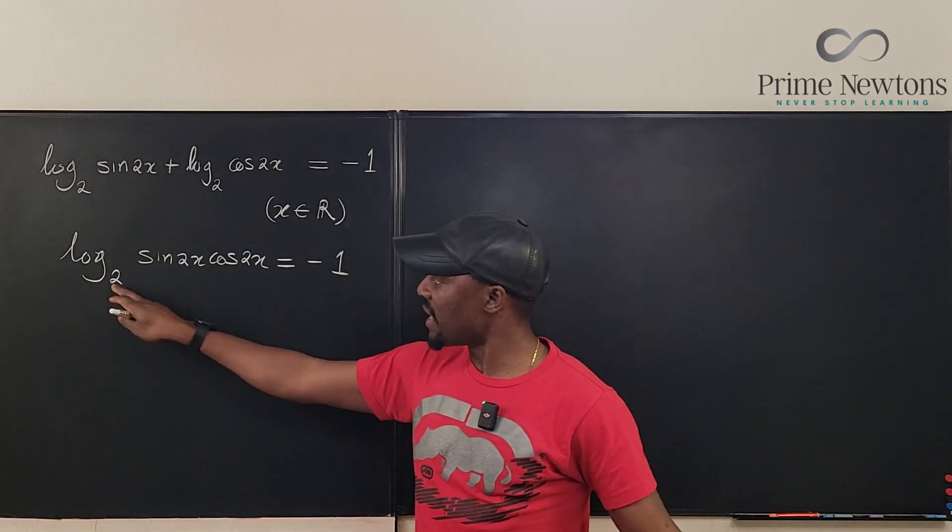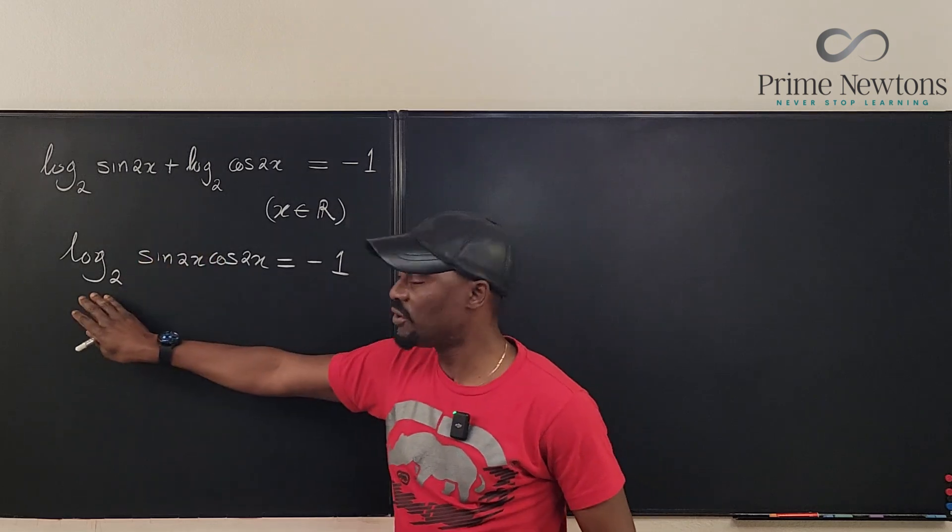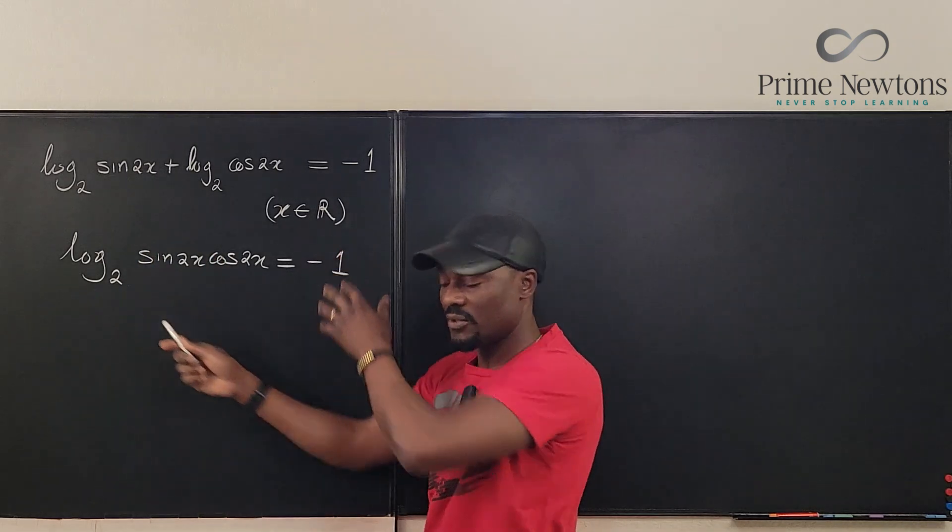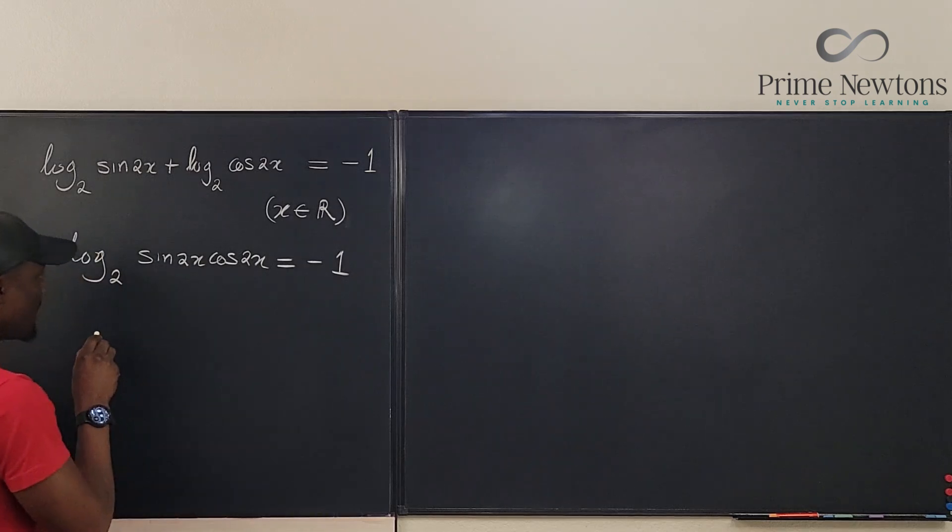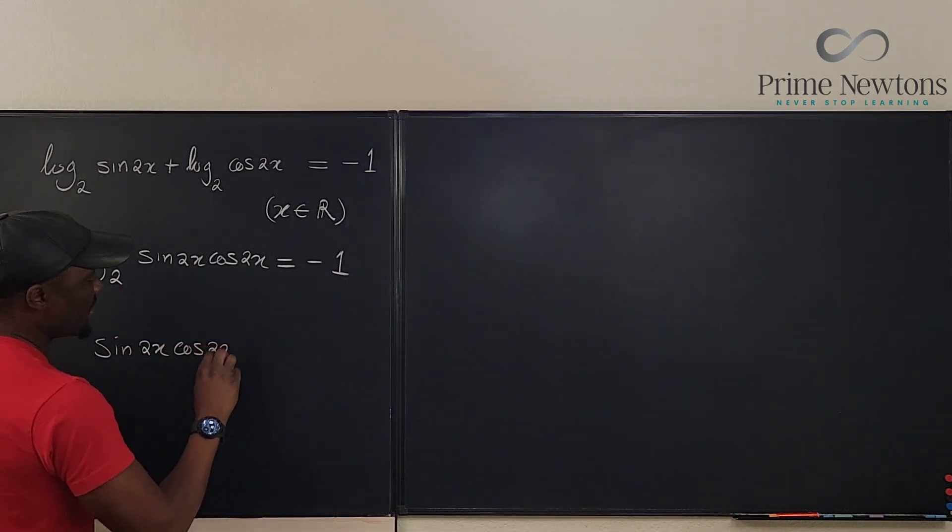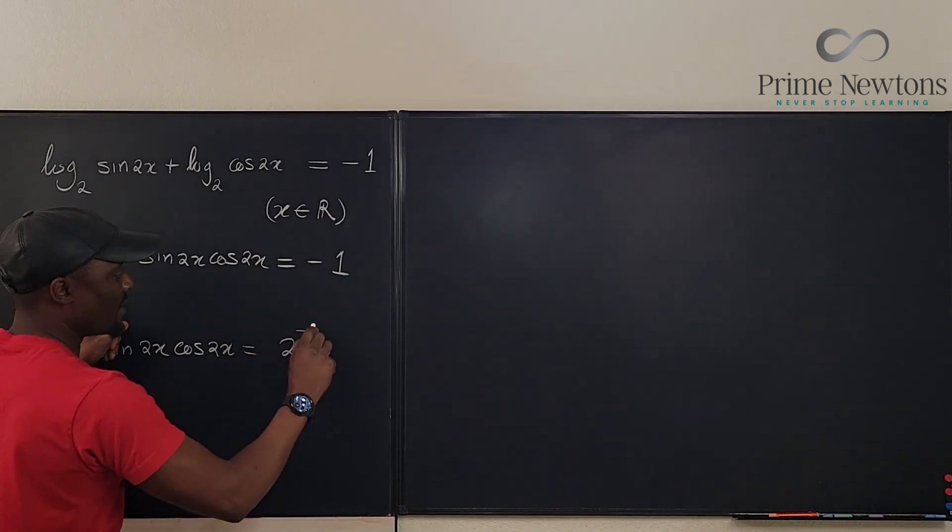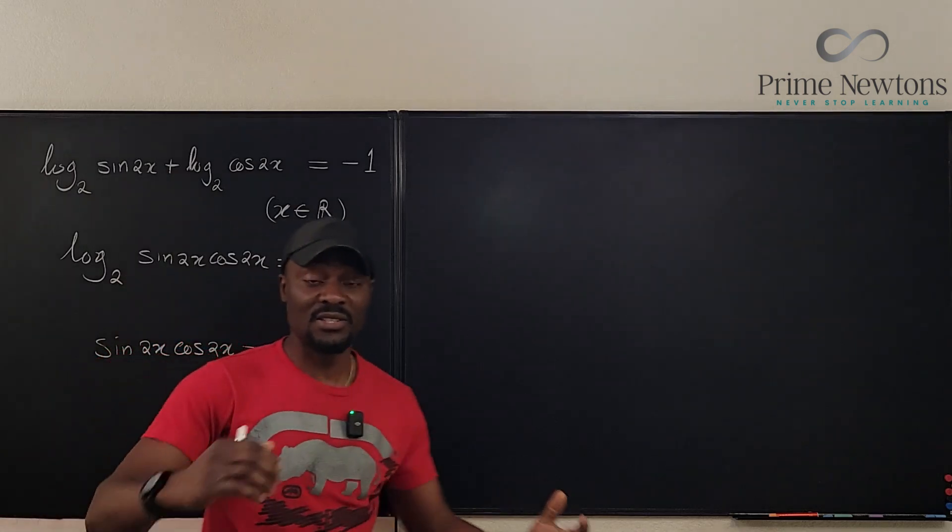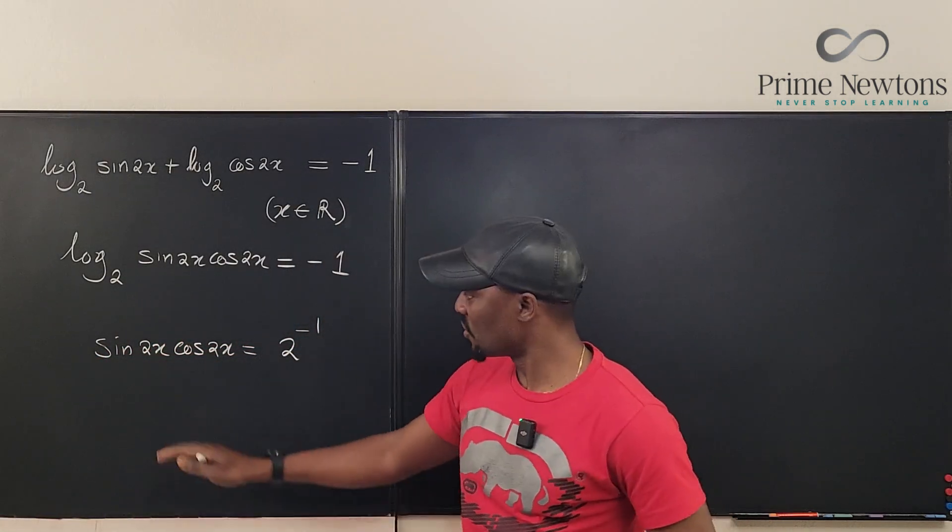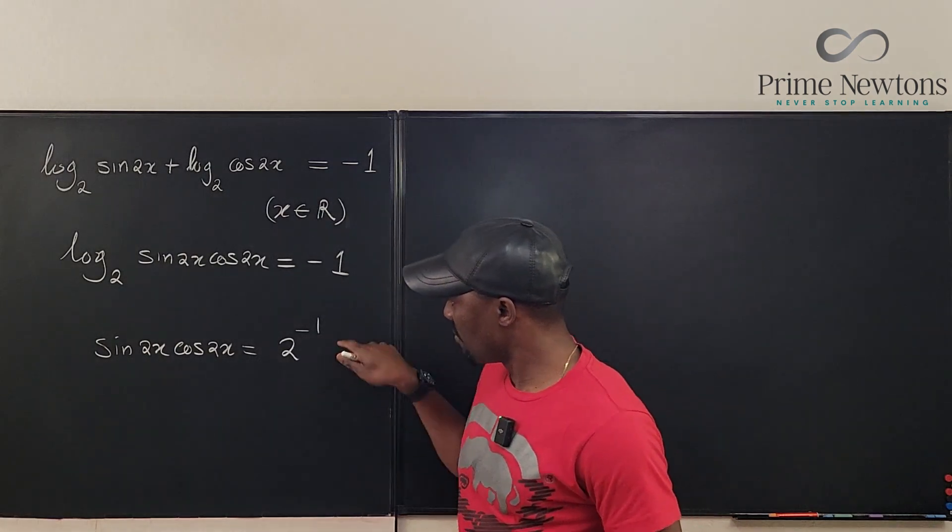So what I'm going to do is free these guys by applying the log rule that says that the logarithm of this function to base 2 which is negative 1 is the power to raise the base. So I'm gonna say that sine 2x cosine 2x will be equal to the base raised to minus 1. That's the meaning of logarithms and that's the connection between logarithms and exponential functions.